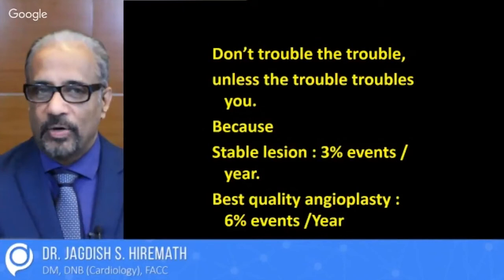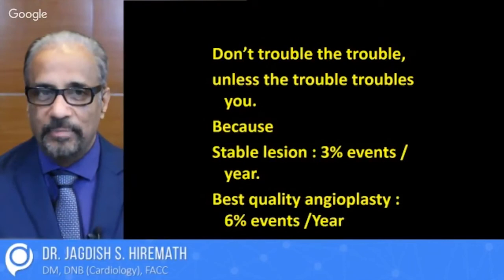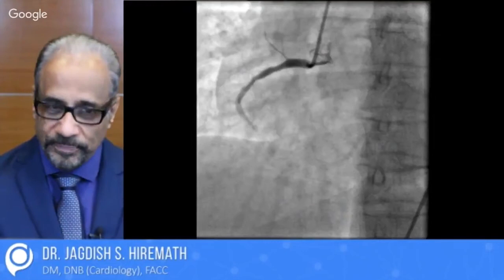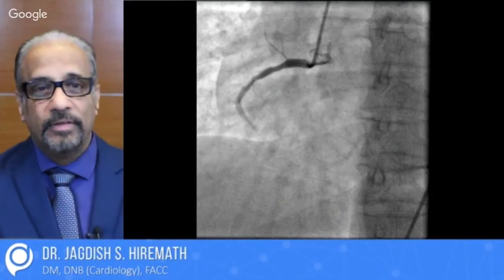Because if you stent a stable lesion, the complications would be about 6% per year, and a stable lesion resulting into myocardial infarction is just 3% per year. So generally, our threshold for stenting stable lesions is less. For example, this lesion which looks moderate — if it is coming as an acute coronary syndrome, one would tend to stent it; but if the person has stable angina, then probably it will not get stented.